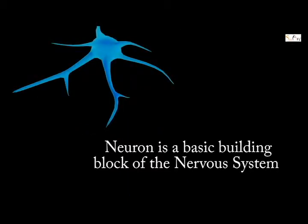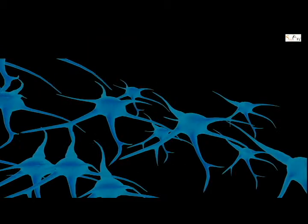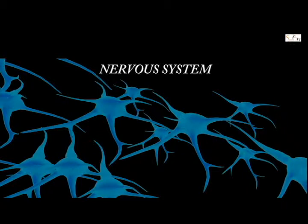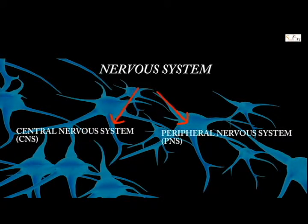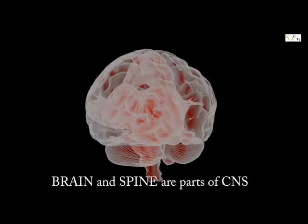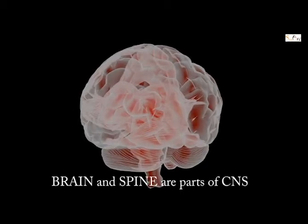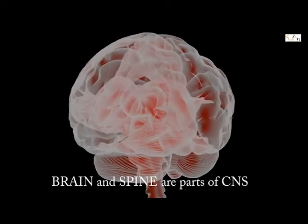A neuron is a basic unit of the nervous system. The nervous system is divided into two parts: the central nervous system and the peripheral nervous system. The brain and spine make up the central nervous system.